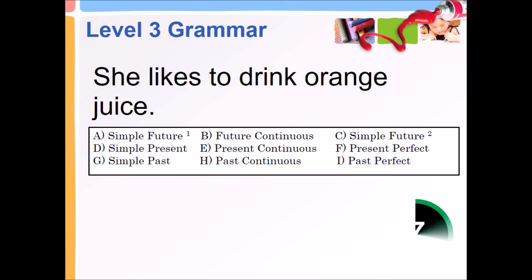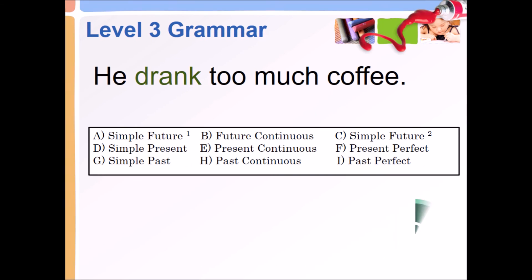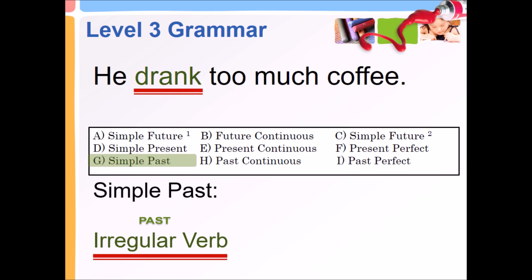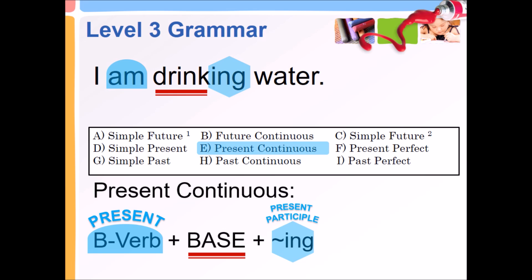She likes to drink orange juice. Simple present: base plus third person singular s, and base. He drank too much coffee. Simple past — past irregular verb. I am drinking water. Present continuous: present be verb plus base plus present participle ing.